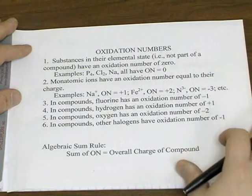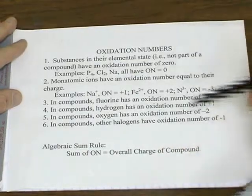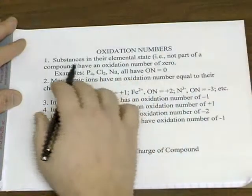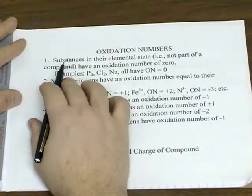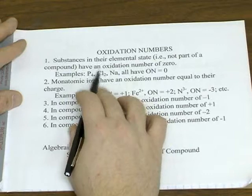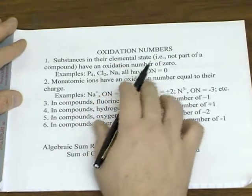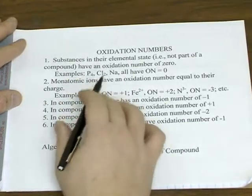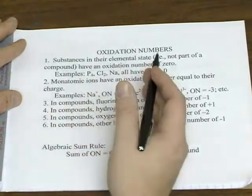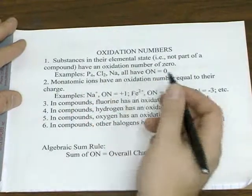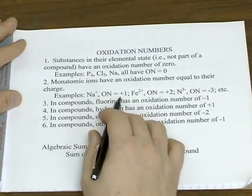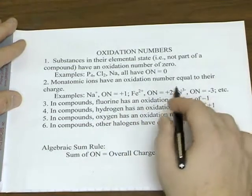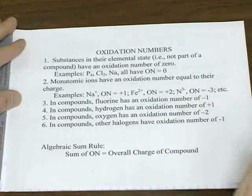So they're given different ways in different books. The way I like to give them is six rules given in decreasing priority. Starting with number one, if it's in its elemental state, whether it's monatomic, diatomic, or polyatomic, they're going to have a zero oxidation number. If it's a monatomic ion, a charged atom, whatever its real charge is, that will be its oxidation number. So sodium ion will have an oxidation number of plus one. Iron two will be plus two. And nitride will have a negative three oxidation number.